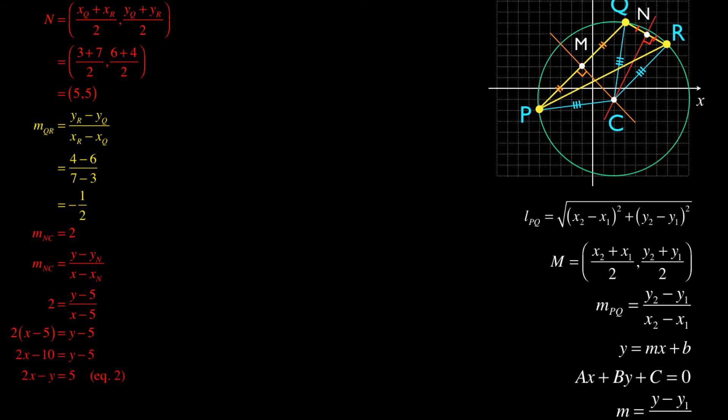Further isolating, I get that 2x - y = 5. That will be equation two.